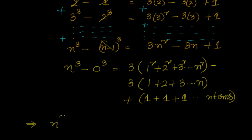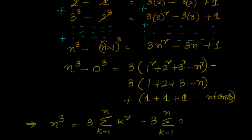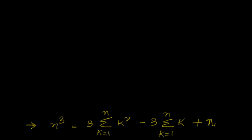The next step: n cube equals 3 times sigma (k=1 to n) of k square, minus 3 times sigma (k=1 to n) of k, plus n. That last term comes from adding 1, n times. So we can write: n cube equals 3 sigma k square minus 3 sigma k plus n, where sigma k from 1 to n is the sum of first n natural numbers.